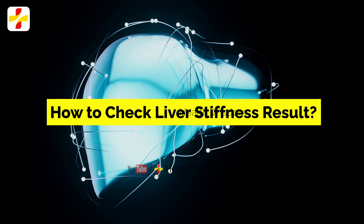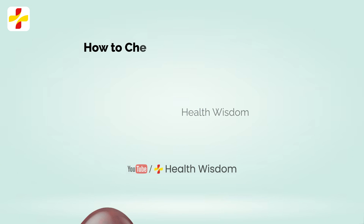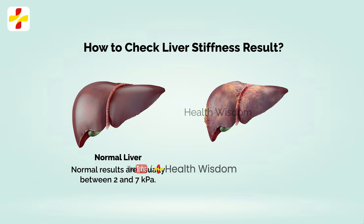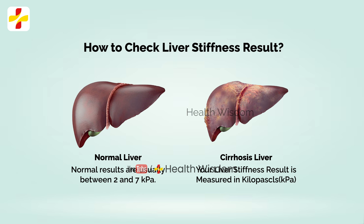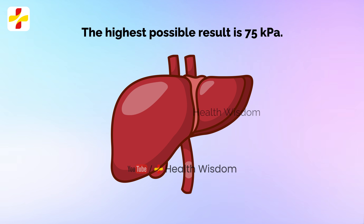How to check liver stiffness result: your liver stiffness result is measured in kilopascals (kPa). Normal results are usually between 2 and 7 kPa. Results may be higher than the normal range if you have hepatitis or liver disease. The highest possible result is 75 kPa.